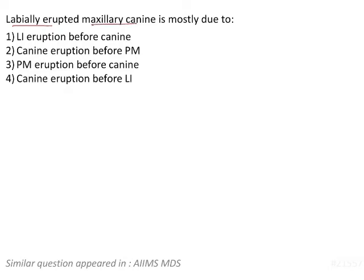The question asks about the etiology for a maxillary canine to erupt labially. The options are: whether the lateral incisor erupted before the canine, the canine erupted before the premolars, the premolars erupted before the canine, or the canine erupted before the lateral incisor.